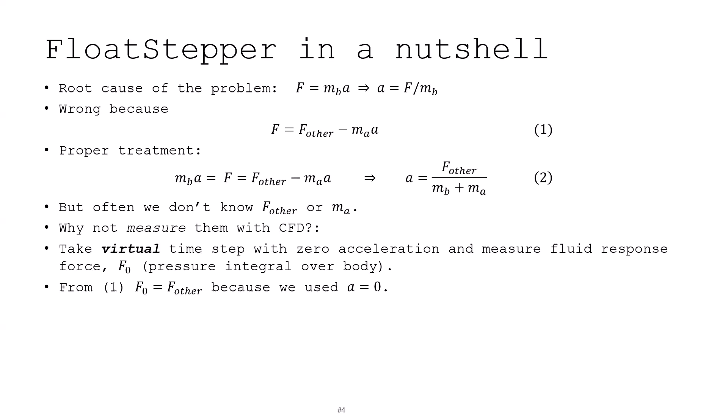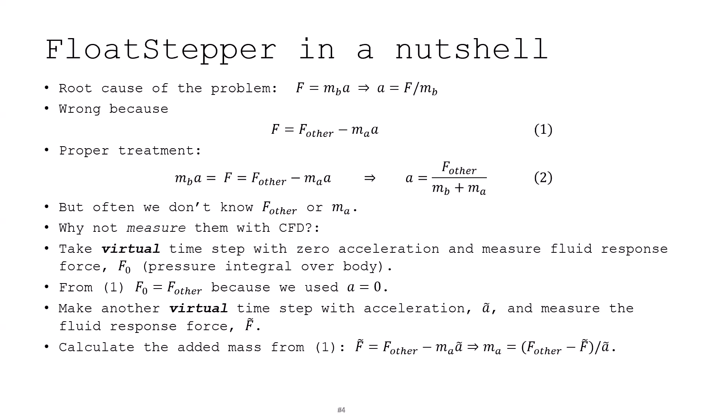Okay, that's great. So now we've got one of the quantities we actually needed. Then the next step is we take another virtual time step with some finite non-zero acceleration, let's call it A_tilde, and then we measure the fluid response force in this virtual time step. Let's call it F_tilde, and then we can plug this into our equation one, F_tilde equals F_other minus M_A times A_tilde. But here, the only thing we don't know is M_A. So if you isolate M_A here, then we actually have the second quantity that we didn't know to calculate a proper acceleration. And then now it's just a matter of plugging these two guys into our acceleration expression, integrating that in time to get velocity and position of the body. Use that to get for the boundary conditions of our fluid, for instance, pressure and velocity calculation. And then that is taking our real time step with a real added mass.